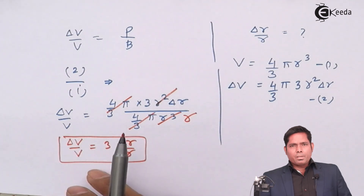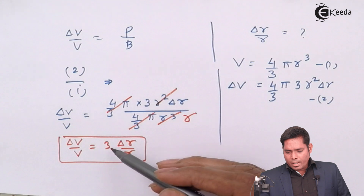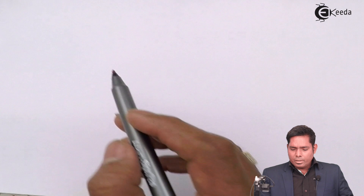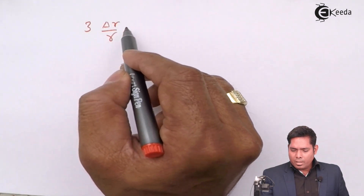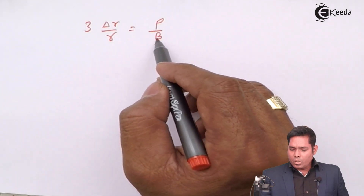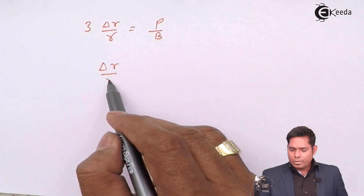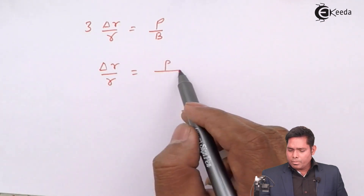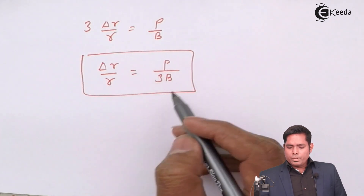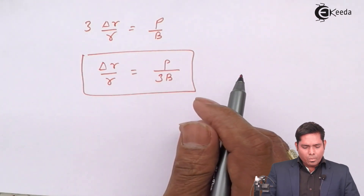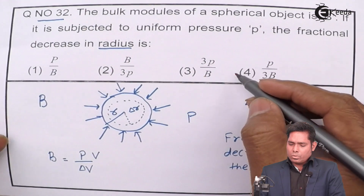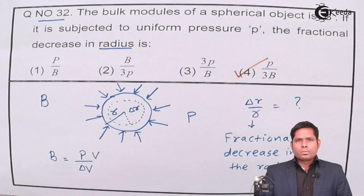So in place of delta V by V, I substitute 3 times delta R over R. That gives us 3 times delta R over R equals P over B. Bringing 3 down, delta R by R equals P divided by 3B. Looking at the options, P by 3B is option four, so the fourth option is the correct answer to this question.